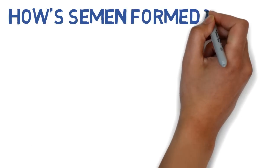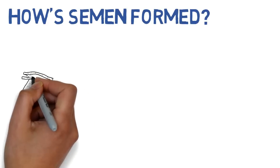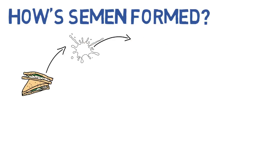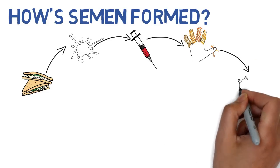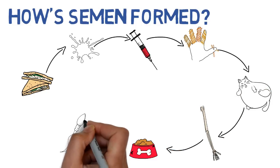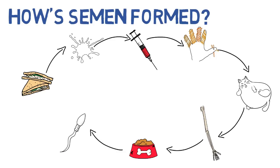How is semen formed? According to science, from the digested food chile is formed. Out of chile comes blood, out of blood comes flesh, out of flesh comes fat, out of fat comes bone, out of bone comes marrow, out of marrow comes semen. Semen is the last variant that is formed out of food.